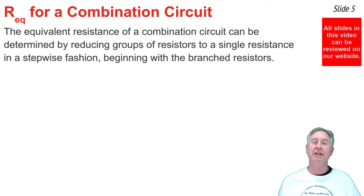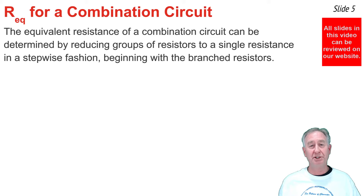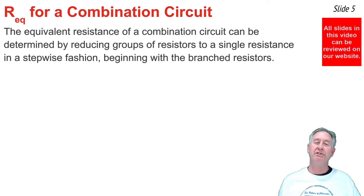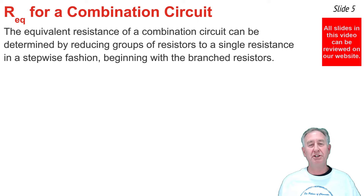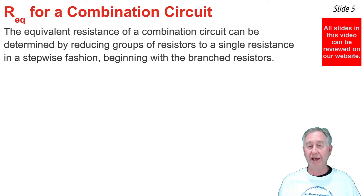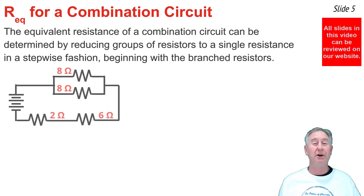Now that you know how to calculate equivalent resistance for series and parallel resistors, you should be able to determine the equivalent resistance for a combination circuit. The strategy involves reducing groups of resistors down to a single resistor in a systematic manner, beginning with those branched resistors. Here's how.